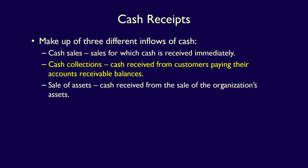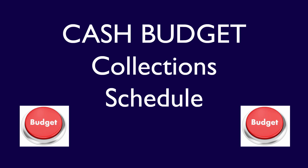The most difficult part of determining cash receipts for the cash budget is the cash collections — cash received from customers paying their accounts receivable balances — because customers don't pay all at the same time. Cash receipts are therefore going to be spread over any number of months. The majority of cash receipts comes from cash sales and cash collections. In order to calculate that, we have to complete a cash collection schedule, which is what we'll do in an upcoming video.